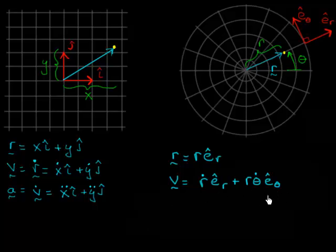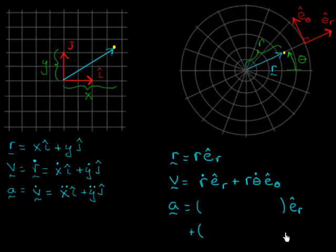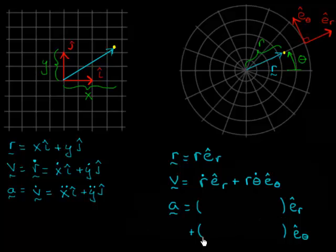Velocity had components in both the e-hat-r and e-hat-theta directions. Now what we want to do in this video is figure out how to write an expression for acceleration. The acceleration is going to have a piece in the e-hat-r direction and a piece in the e-hat-theta direction. We're going to derive what goes in here, but our derivation is not going to be rigorous. We're going to look through the simulation and then intuitively determine what should be there.